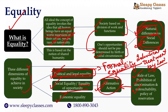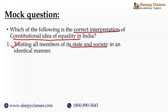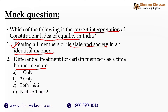Now I have broken this down. Let me show you a mock question from prelims: 'Which of the following is the correct interpretation of the constitutional idea of equality in India?' Statement one: treating all members of its state and society in an identical manner. Statement two: differential treatment for certain members as a time-bound measure. Options: one only, two only, both one and two, or neither one nor two. You have to answer in the comments, and I will tell you the detailed explanation and whether your answer is correct or wrong.